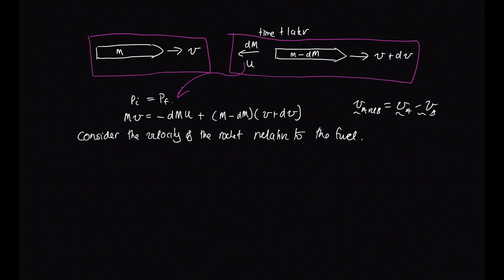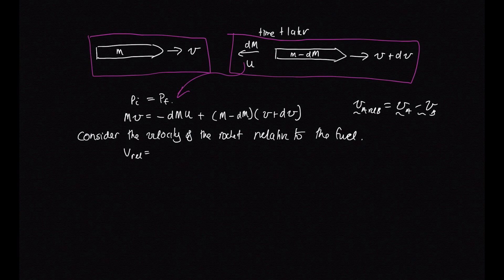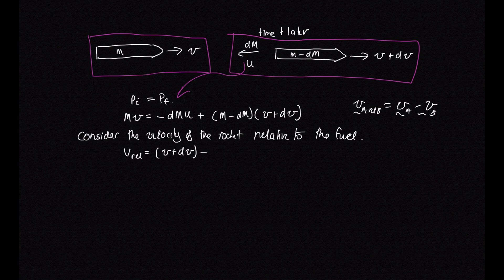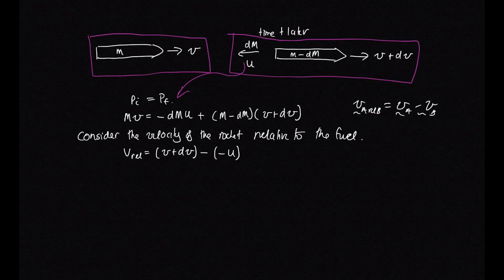And in this case, we're looking at the velocity of the rocket relative to the fuel. So this will be the velocity of the rocket, which is now v plus dv minus the velocity of the fuel. And the velocity of the fuel is minus u. The minus because it's going in the opposite direction. So this is equal to v plus dv plus u. So that gives us the velocity of the rocket relative to the fuel.